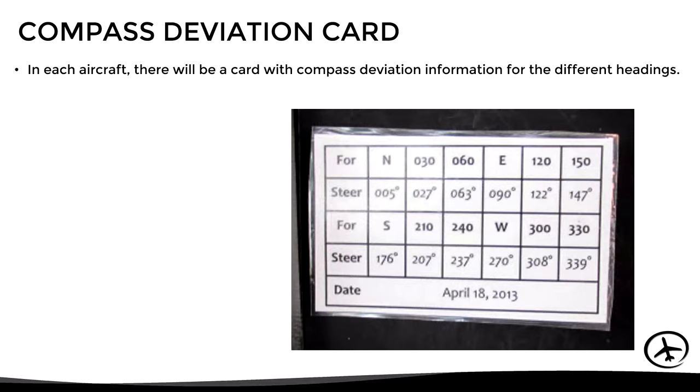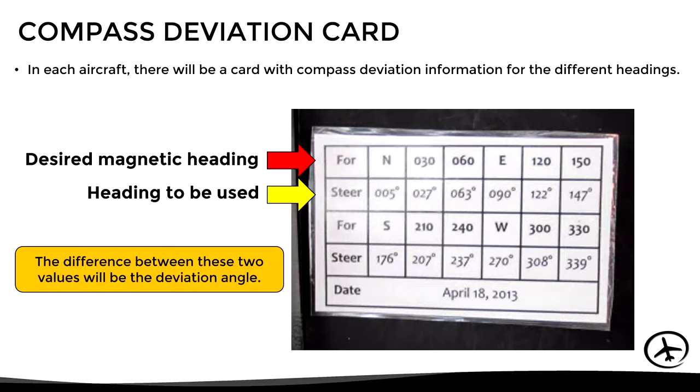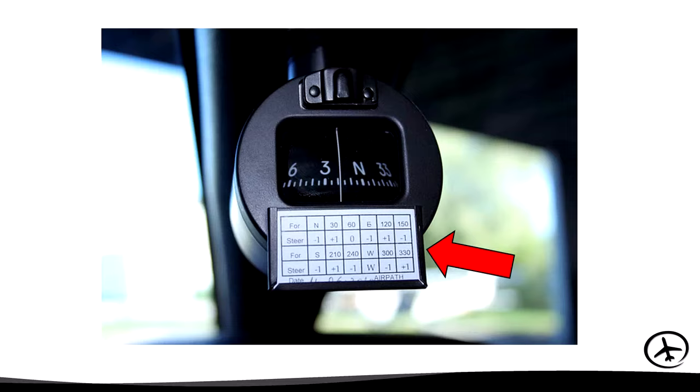To know how much compass deviation applies for a particular aircraft and heading, there is the compass deviation card. This card includes compass deviation information for a particular aircraft and for different headings. In the upper row we find the desired magnetic heading, while in the lower row we find the corrected heading to be used, taking into account the compass deviation. The difference between these two values is the deviation angle for that heading. This card is normally located in the cockpit, visible to the pilot.